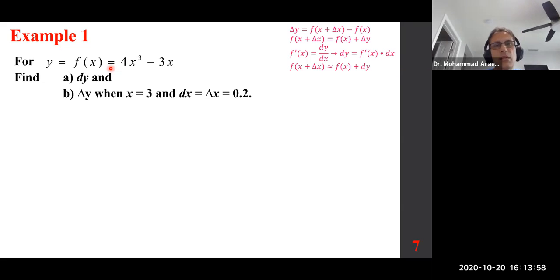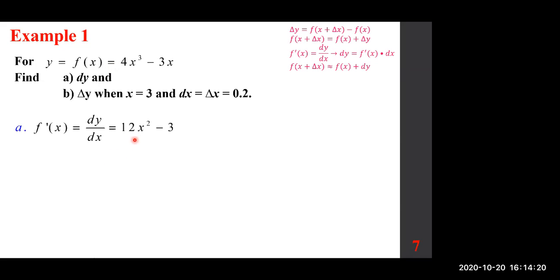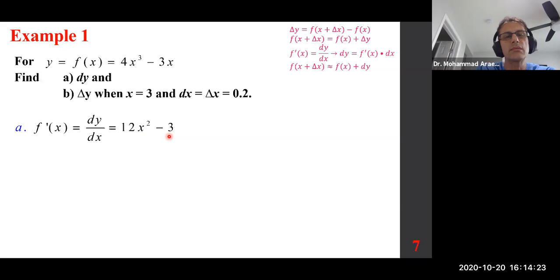So everybody, what is f'(x)? Can anybody tell me what's f'(x)? It's 12x² minus 3. Thank you. dy/dx is 12x² minus 3. That's all. So, so far, no big deal. So how do you change it to dy? All you have to do, take a look class, write the same thing and tag along dx. So first differentiate, then put the dx next to it. Don't forget the parenthesis.